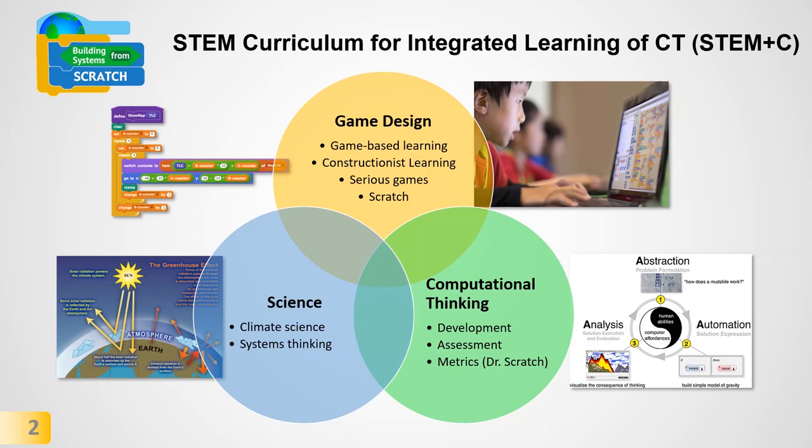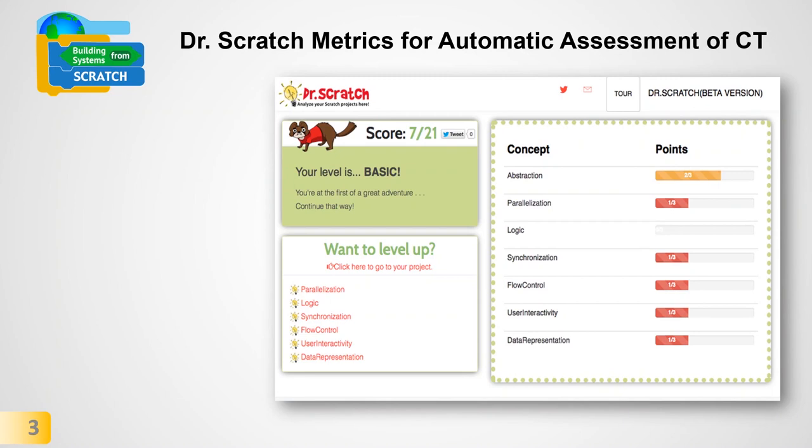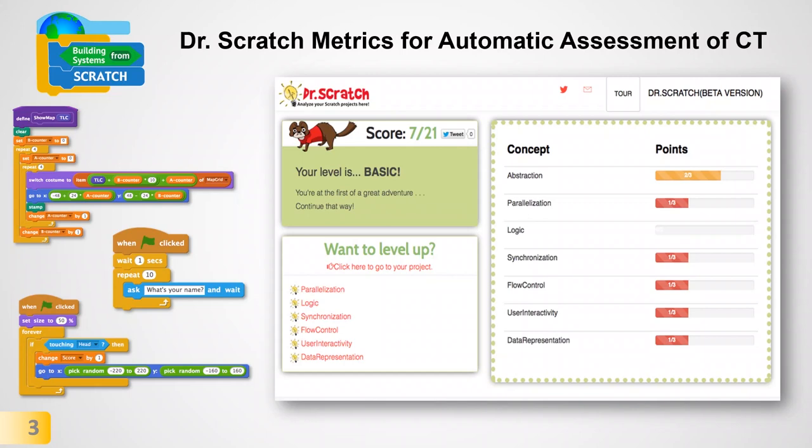Let me explain how the Dr. Scratch metrics work. These metrics are based on observable coding practices in Scratch — namely how the Scratch blocks are used to develop and design a program. These practices are then translated into computational thinking dimensions, which in the case of Dr. Scratch are 7: abstraction, parallelization, logic, synchronization, flow control, user interactivity, and data representation.